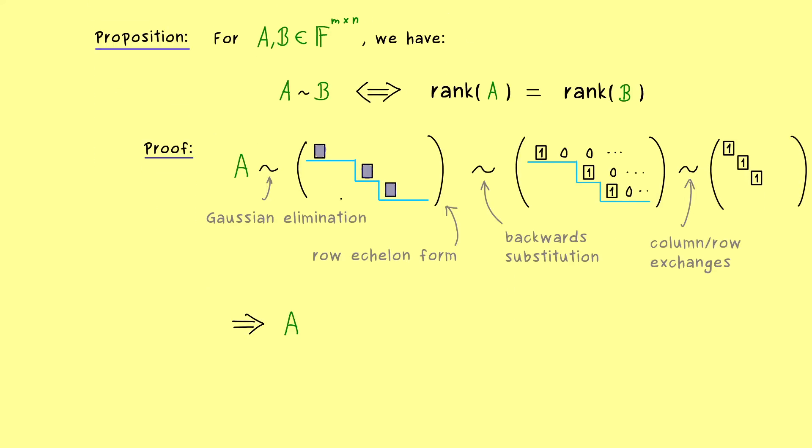Okay, so now the result here is that every matrix A can be transformed in this way, and then it's equivalent to a matrix which has an identity matrix in it. Indeed, the size of this identity matrix is exactly given by the rank of A.